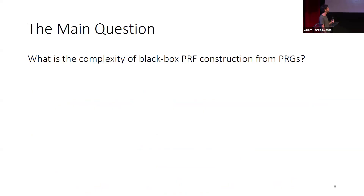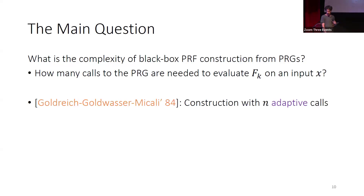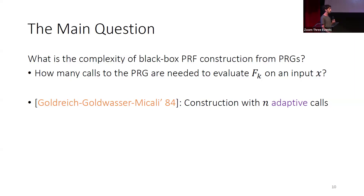We know how to construct pseudo-random functions from PRGs. We have the GGM construction of Goldreich, Goldwasser, and Micali, which shows a simple and elegant construction using adaptive calls. The question of complexity is how many calls to the PRG we need to make in order to evaluate the function on a single point x. In GGM, we need to make n adaptive calls. Separately, work by Levine showed the domain extension trick, showing that it's enough to make a super-logarithmic number of adaptive calls to the PRG.